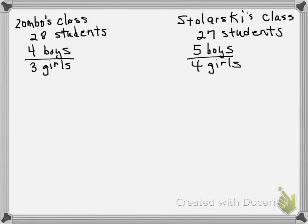In real numbers in module 12, section 7.3, a sample problem says the ratio of boys to girls in Ms. Zombo's class is 4 to 3.